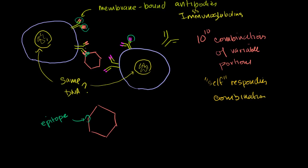There aren't quite 10 billion combinations because you have to remove all the ones that would bind to your own cells. But there's still a huge number very likely to bond to some part of some pathogen. Once one B cell binds to the new pathogen, it becomes activated. In order to really become activated, you normally need help from helper T cells — it's a fail-safe mechanism — but essentially, it just needs to be triggered by binding with the pathogen.